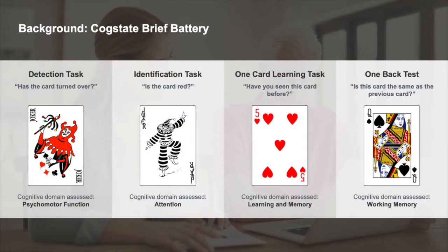Whilst there are tests covering a broad range of cognitive domains and test paradigms, perhaps the most widely used has been the CogState Brief Battery. The CogState Brief Battery, or CBB, is comprised of four tests with a total completion time of less than 20 minutes. The CBB has a game-like interface which uses playing card stimuli and requires participants to provide simple yes or no responses. These tests are termed detection, identification, one card learning, and one back, and can be used to assess a range of important cognitive processes.